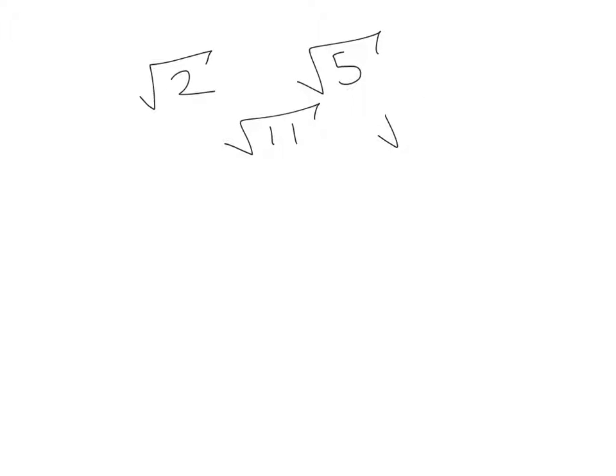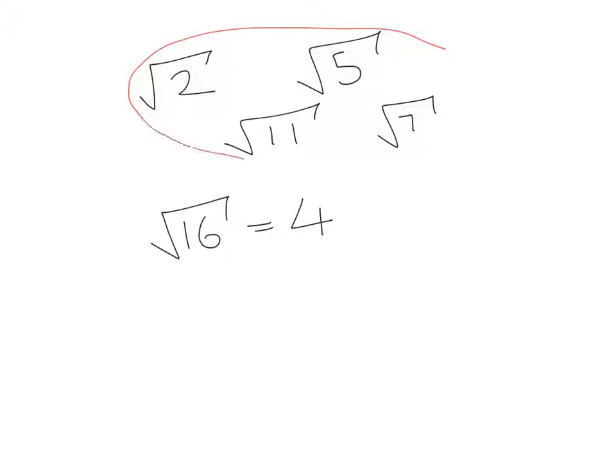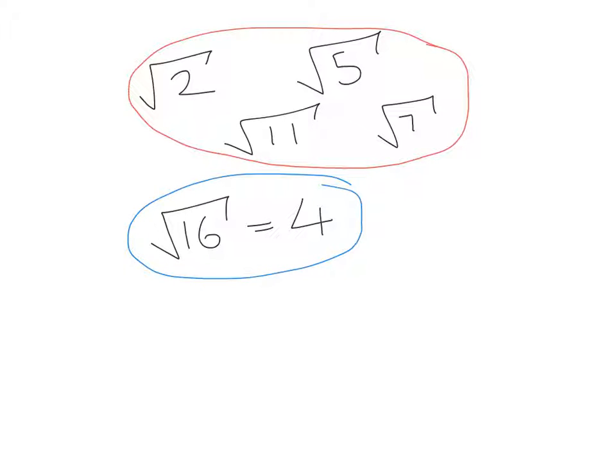In this video we're going to look at surds. A surd is a number that doesn't have an exact value. For example, pi doesn't finish, and numbers like the square root of 2 are just decimals that go on forever - so root 2 is a surd, root 5 is a surd, root 11 is a surd. We would not call the square root of 16 a surd because the square root of 16 is 4.